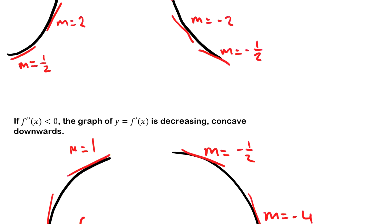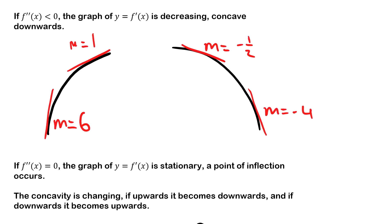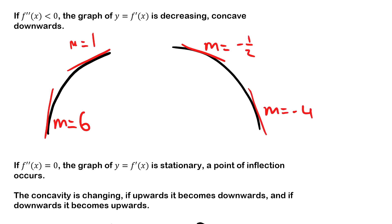If the second derivative is less than zero, we know that the graph of the first derivative is decreasing, which means it's concave downwards. Again, you can see that the gradient as we go from left to right is decreasing.